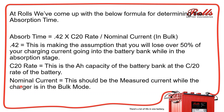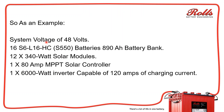One of the things I try to convince installers to do is: when you install the system, during the commissioning process, put a current meter on the DC negative and look at how much current is actually flowing while charging. Discharge the batteries 15, 20, 30 percent, put a current meter on there, and while it's charging, look to see what the actual current is. Then use that number in your formula. The C20 rate is the amp hour capacity of the battery bank. For example, we've got a system voltage of 48 volts with 16 S6-L16 HCs — previously the S550 batteries, same battery, just a different model number. These batteries are rated at 890 amp hours: 445 amp hours for each parallel string, two strings gives you 890.